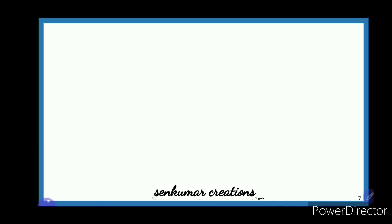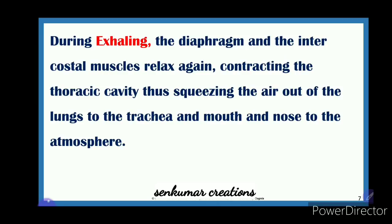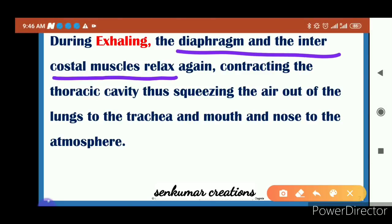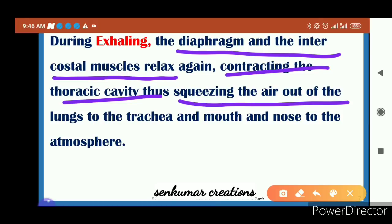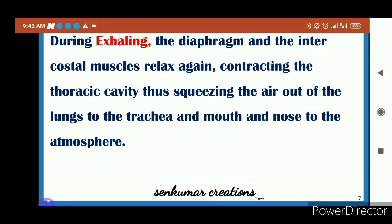During exhaling, the diaphragm and the intercostal muscles relax — the opposite of the inhaling process. This contracts the thoracic cavity, squeezing air out of the lungs through the trachea and mouth or nose to the atmosphere. The pressure increases due to more gas being present and the volume decreases, so carbon dioxide is squeezed out of the lungs and sent outside.